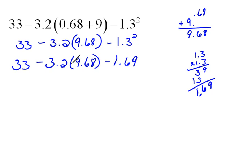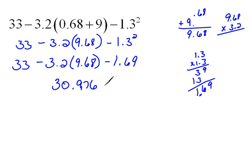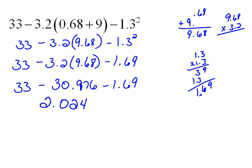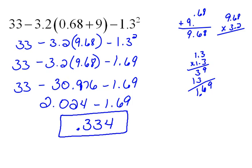Now we have subtraction, multiplication, and subtraction. Multiplication comes next. When we multiply 9.68 times 3.2, we get 30.976. Then we only have subtraction, so we move left to right. 33 minus 30.976 gives us 2.024. Then when we subtract 1.69, we get 0.334 as our final answer.